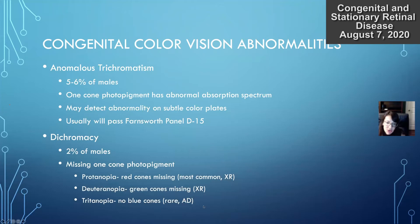Patients without blue cones is much more rare and tends to be autosomal dominant. They're not able to see blue or yellow very well.